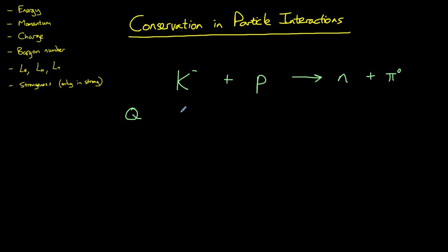So first of all charge. A kaon has a charge of minus one. Proton has a charge of plus one and that decays into neutron which is neutral and a neutral pion which is of course neutral as well. So in this case charge is conserved.